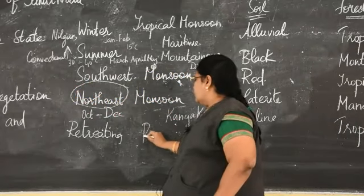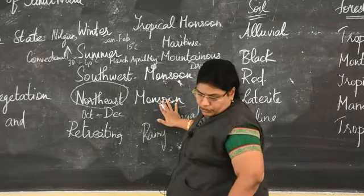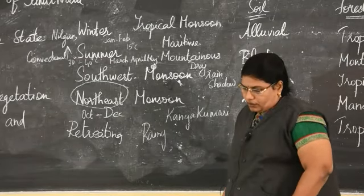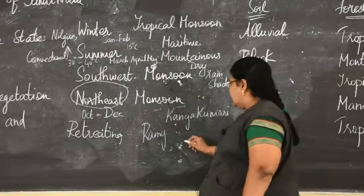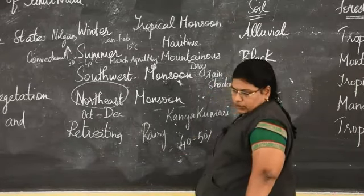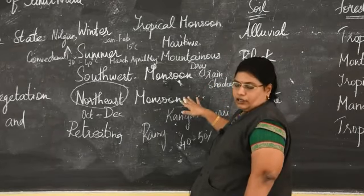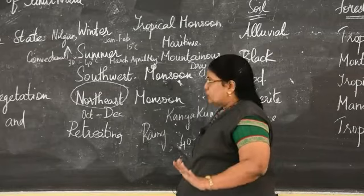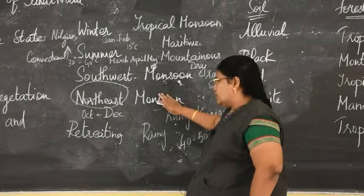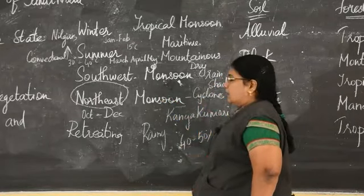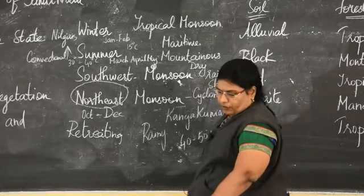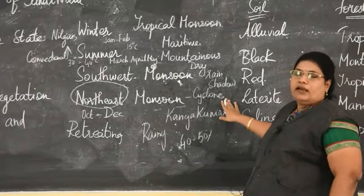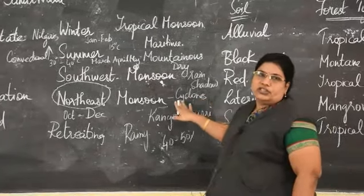Tamil Nadu gets very good rainfall from the northeast monsoon. The coastal areas get nearly 60% of the rainfall, and interior districts get nearly 40 to 50% of the annual rainfall. During this northeast monsoon, tropical cyclones originate from the Bay of Bengal and bring heavy rainfall to the state. The state receives rainfall of nearly 50 to 100 centimeters. However, cyclones sometimes affect the coastal areas and cause a lot of destruction to life and property.